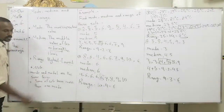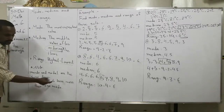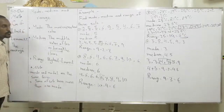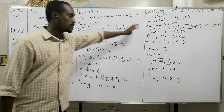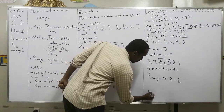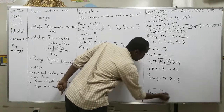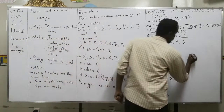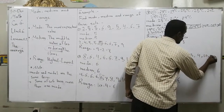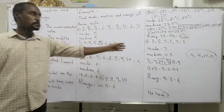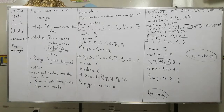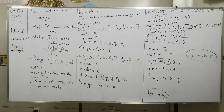Mode and modal are the same idea. Some sets have more than one mode. If you don't have any repeated numbers, that means no mode. For example, a set like 3, 4, 10, 12 — we don't have any mode. For homework, go to the homework book and solve pages 36, 37, 38, and 39.